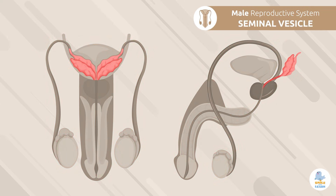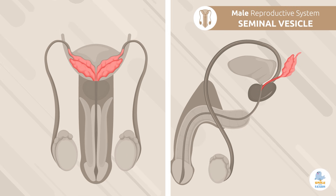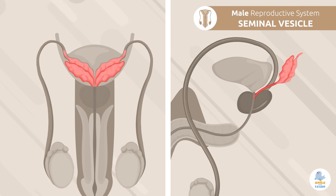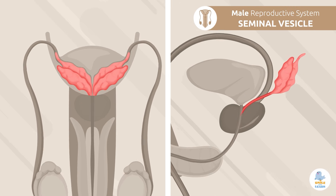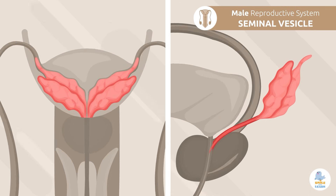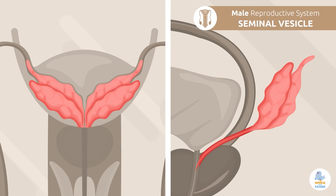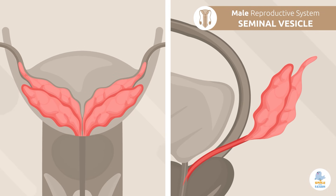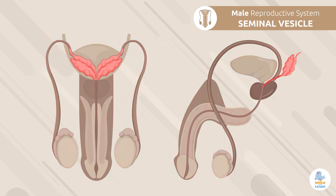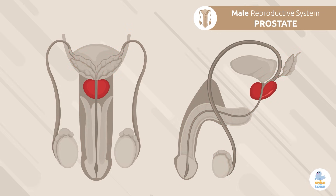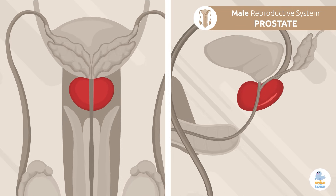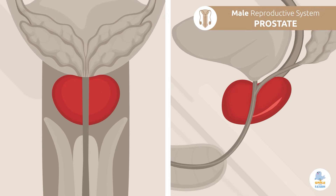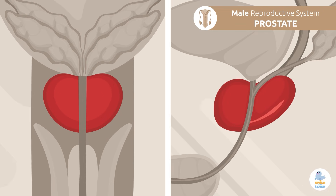The seminal vesicle is responsible for producing most of the seminal fluid, which nourishes sperm. The prostate's function is to produce the rest of the seminal fluid.